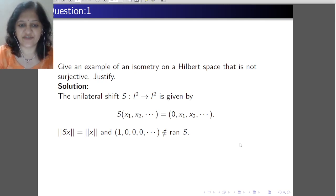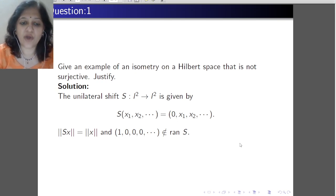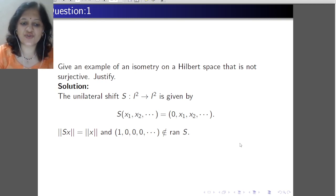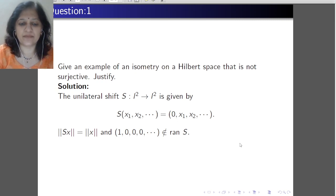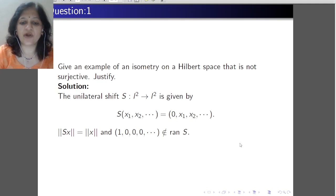This is also called the right shift. If you compute the norm, it is easy to see that norm Sx equals norm x. So it is an isometry. It is not surjective because if you consider e1, that is (1, 0, 0, ...), then that element is not in the range of S. So the range of S is not the whole l2, meaning it is not surjective.